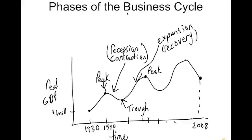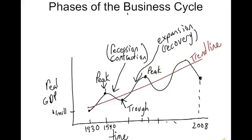Even though real GDP goes up and down over time, you can track the overall trend in long-run GDP. For a country, you hope that if you draw a line through the averages of the peaks and troughs, the trend is an overall increase in real GDP. Countries are typically looking for about a two percent increase in real GDP in the long run.